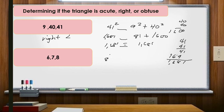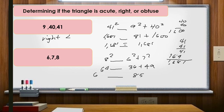For sides 6, 7, 8: the largest is 8, so c² = 64, and a² + b² = 36 + 49 = 85. Since 64 < 85, therefore a² + b² > c², making it an acute triangle. To summarize: if c² = a² + b² it's right; if c² > a² + b² it's obtuse; if c² < a² + b² it's acute. Thank you and I hope you learned something from Teacher Mark.